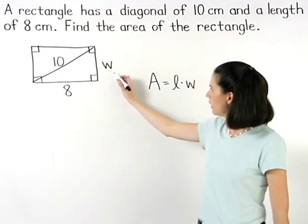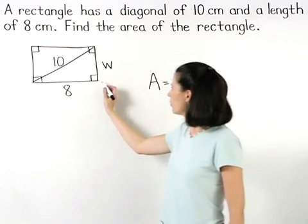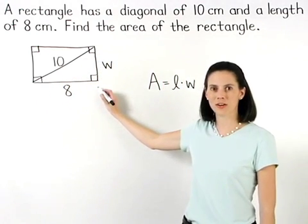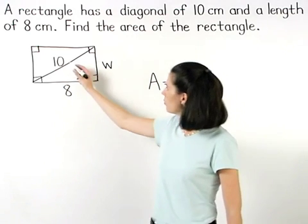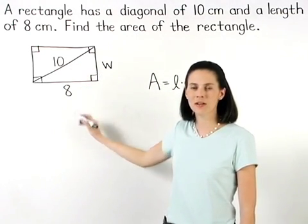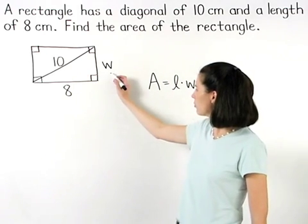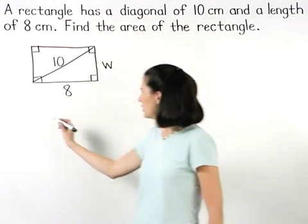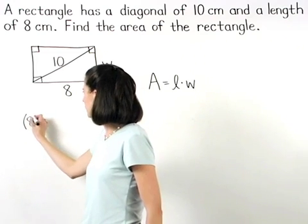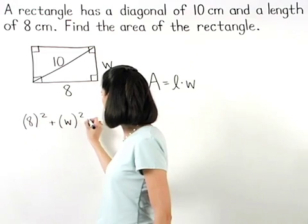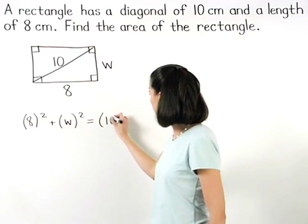To find the value of W, notice that a right triangle is formed in the lower right of the figure. Since we know the lengths of two sides of the right triangle, we can use the Pythagorean theorem to find the length of the third side. So we have 8 squared plus W squared equals 10 squared.